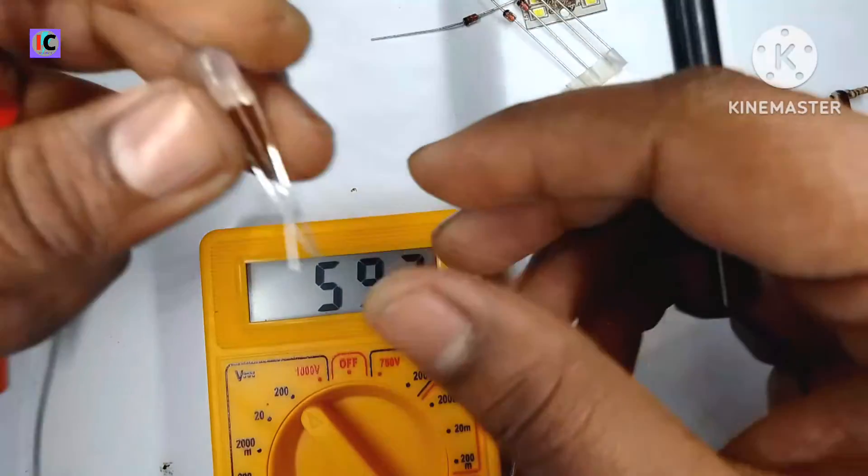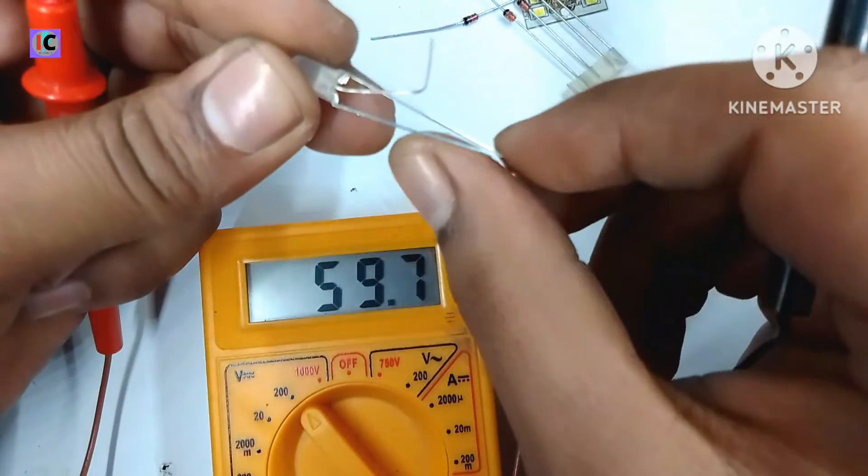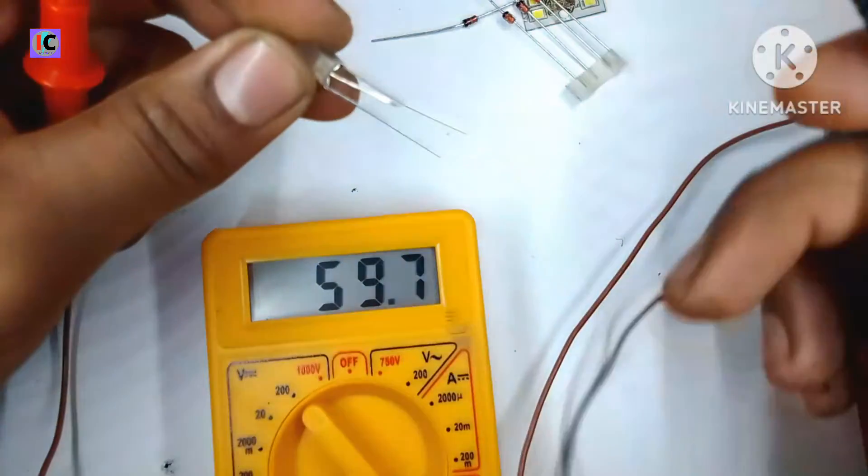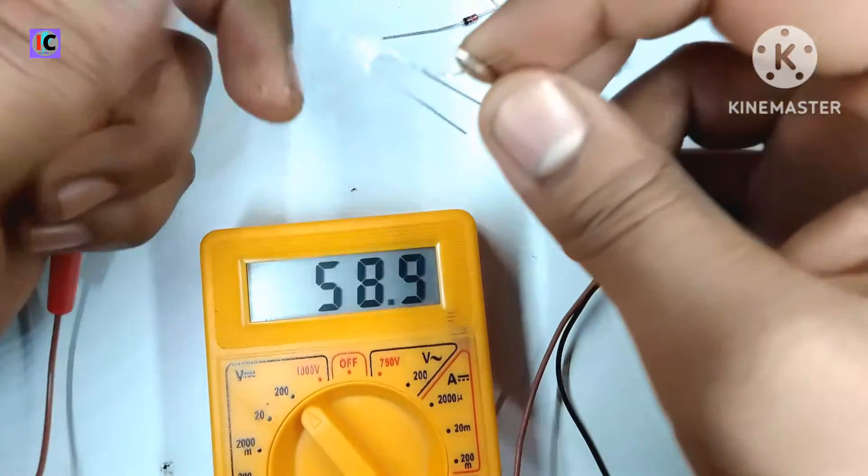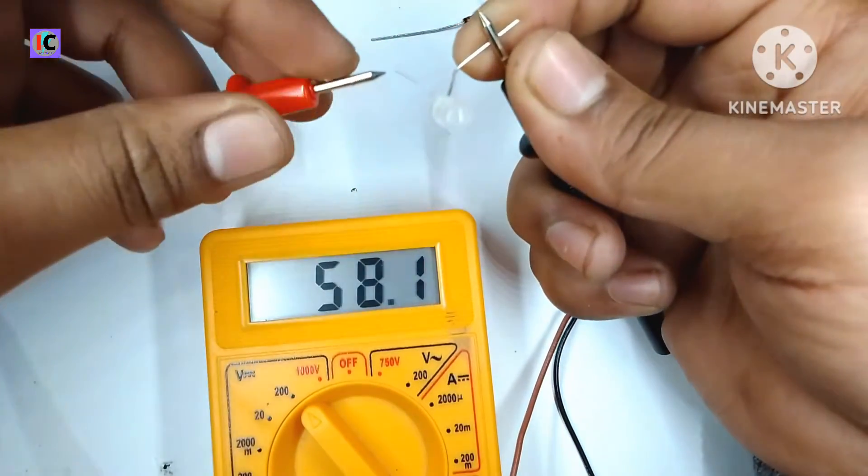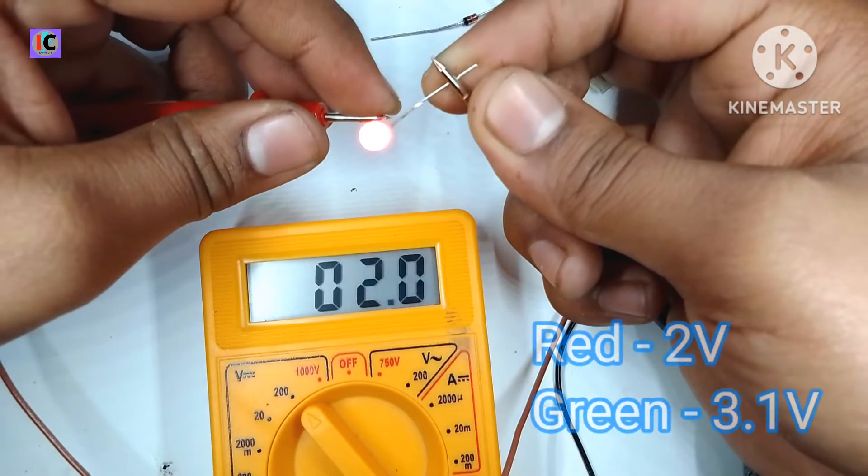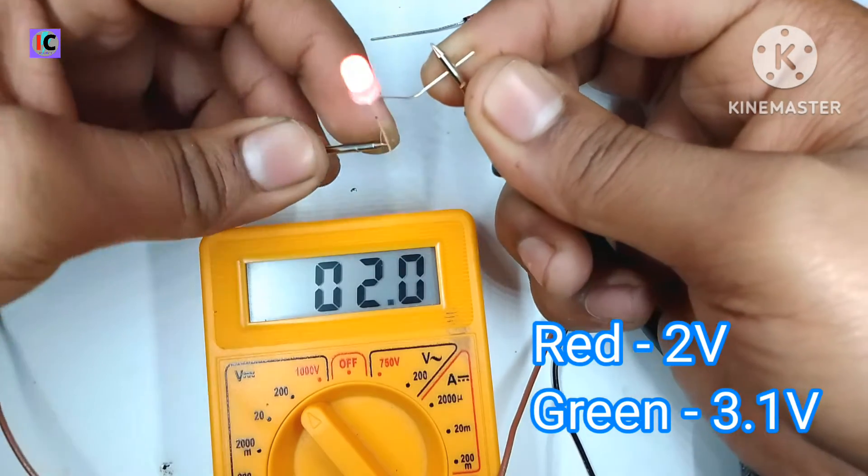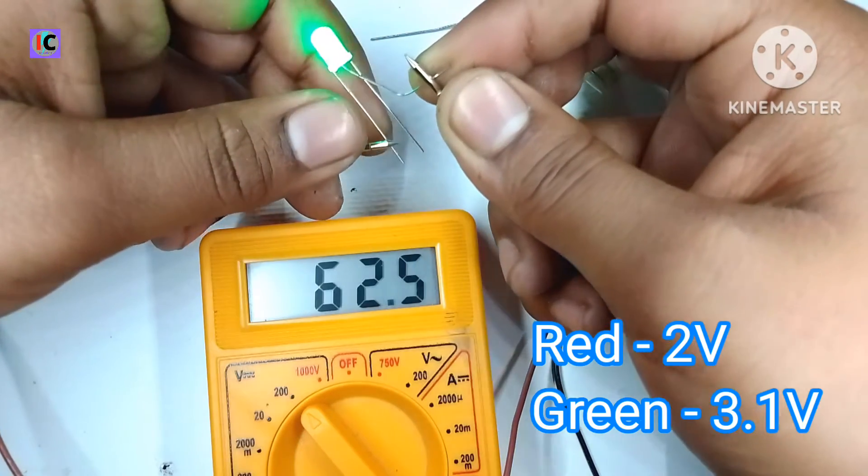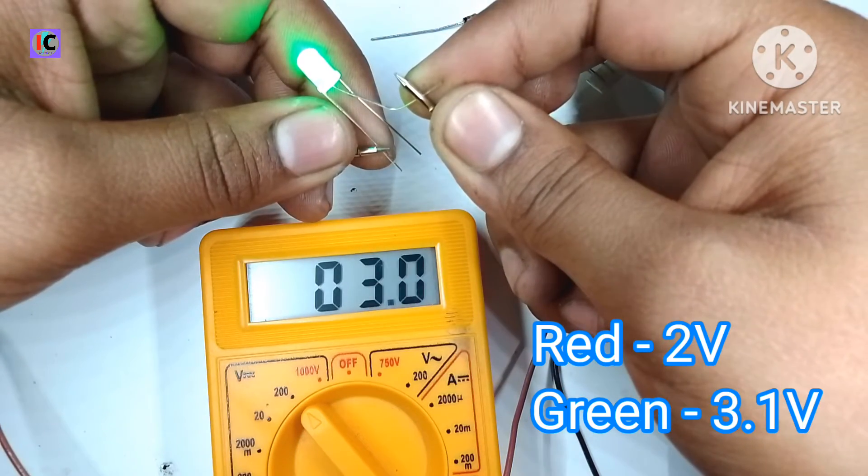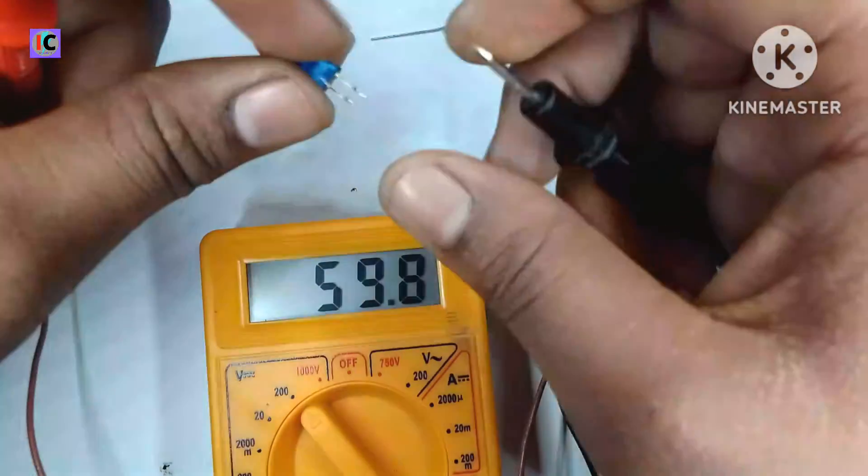And after testing this multicolor LED which is a common cathode, it means a common point is the negative. So as you can see it's red and the voltage for the red LED is 2 volts maximum, and for the green LED is maximum 3.1 volts.